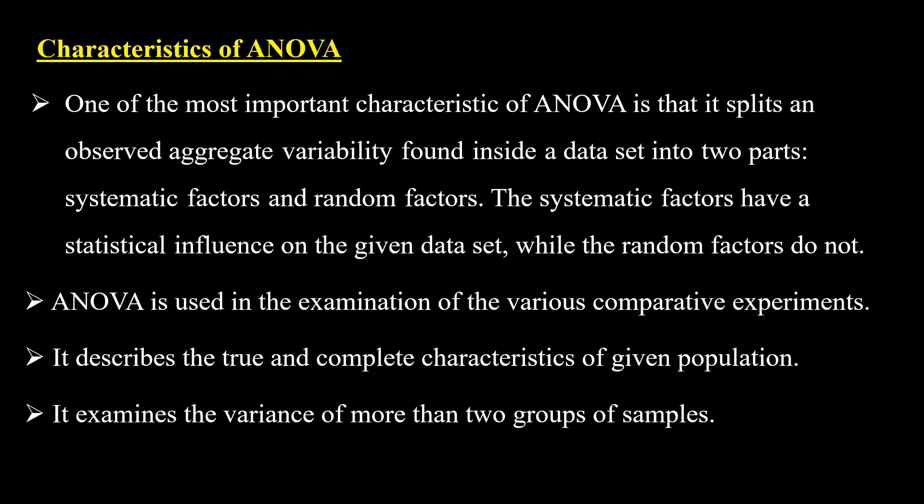Characteristics of ANOVA: one of the most important characteristics is that it splits an observed aggregate variability found inside a data set into two parts — systematic factors and random factors. Systematic factors have a statistical influence on the given data set, while random factors do not. ANOVA is used in examination of various comparative experiments. It describes the true and complete characteristics of a given population. ANOVA examines the variance of more than two groups of samples.